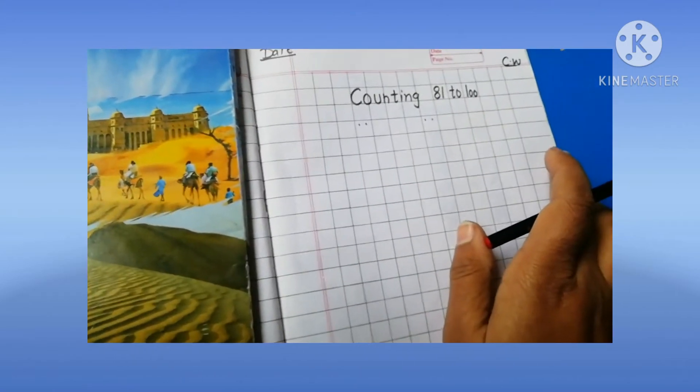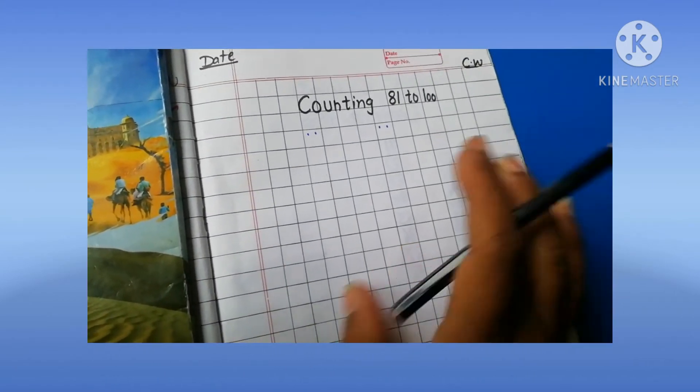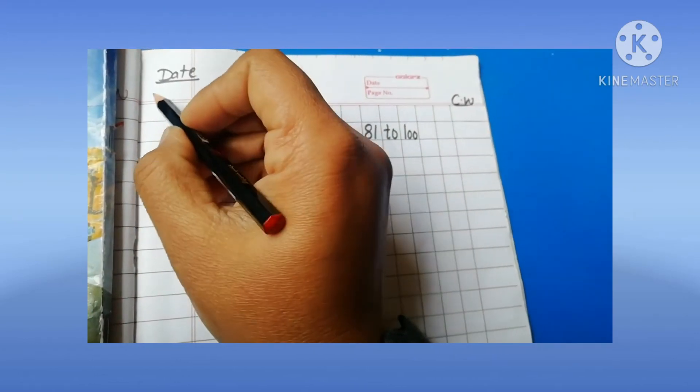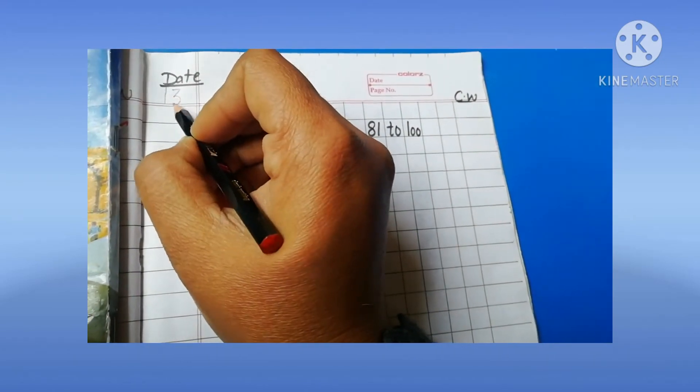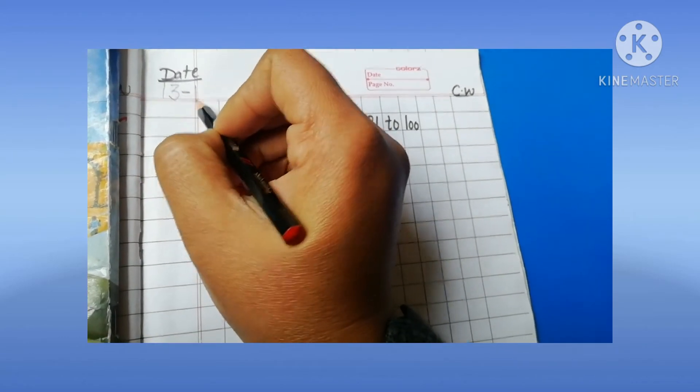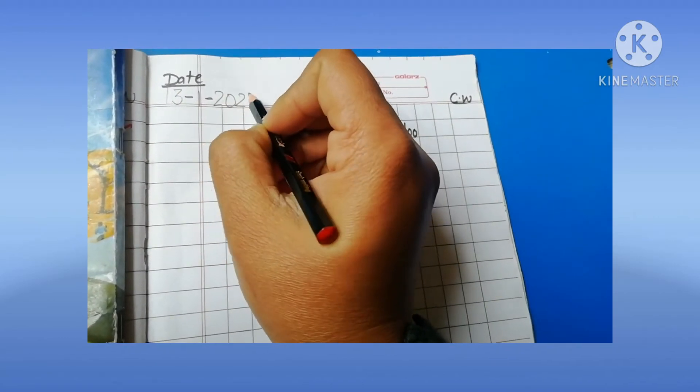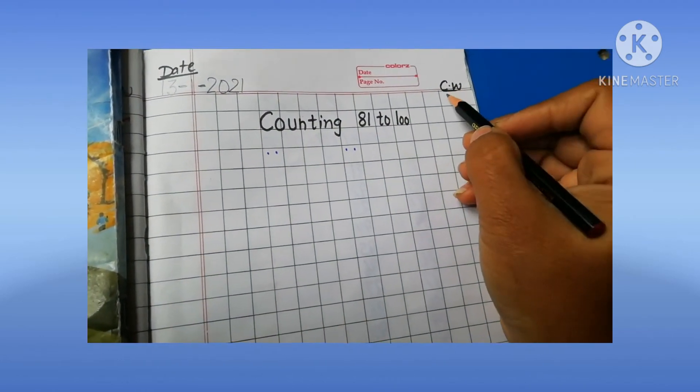Now we write here counting 81 to 100. First of all dear student you write the date 13-1-2021, CW.